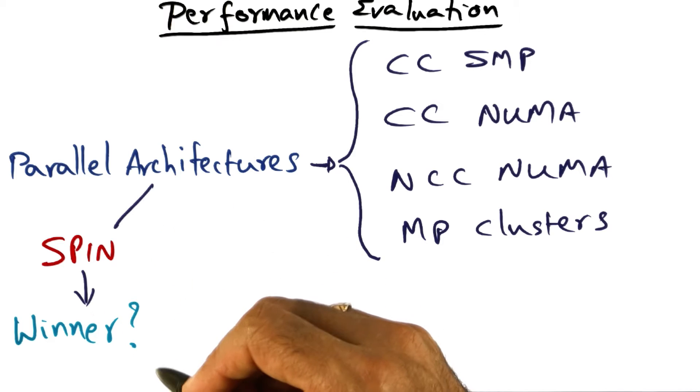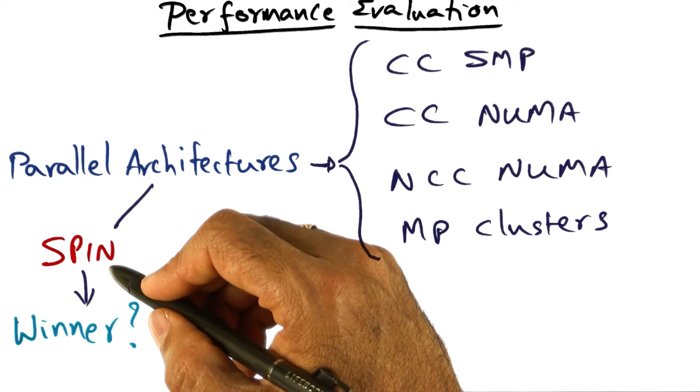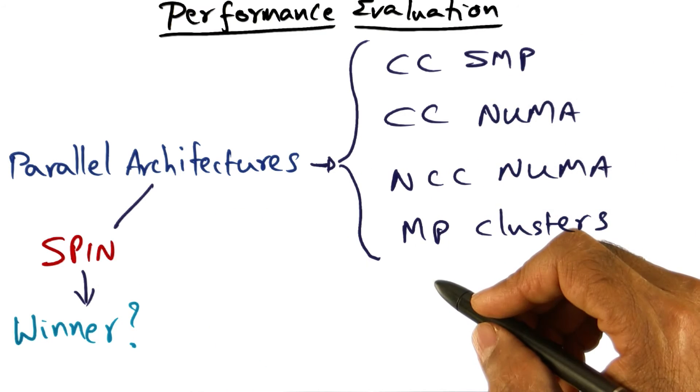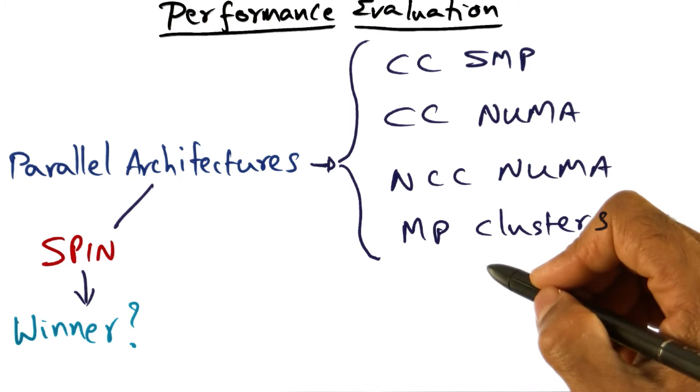And the question you want to ask is, if you implement the different types of spin algorithms that I've been discussing with you, which would be the winner on these machines? Well, the answer is not so obvious. It depends really on the kind of architecture.